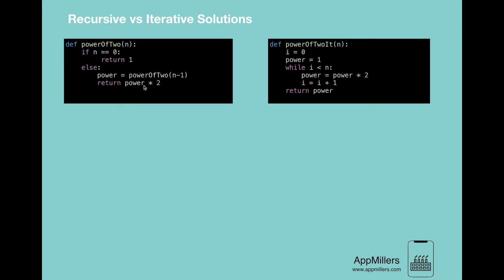Looking at this code carefully, we can see that the recursion code is easier to write compared to the iterative one. You might not notice it here because it's a very simple function, but there are many situations where converting a recursive function to an iterative function is extremely difficult.